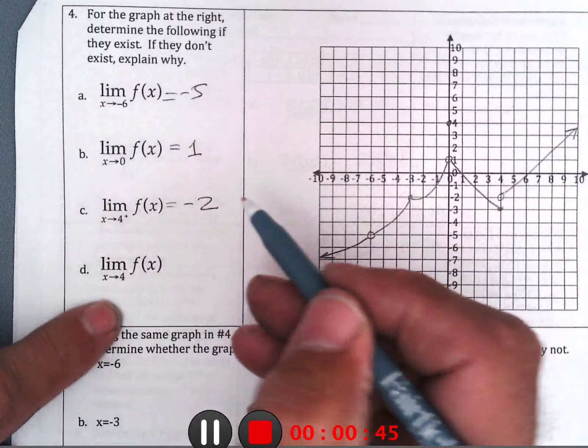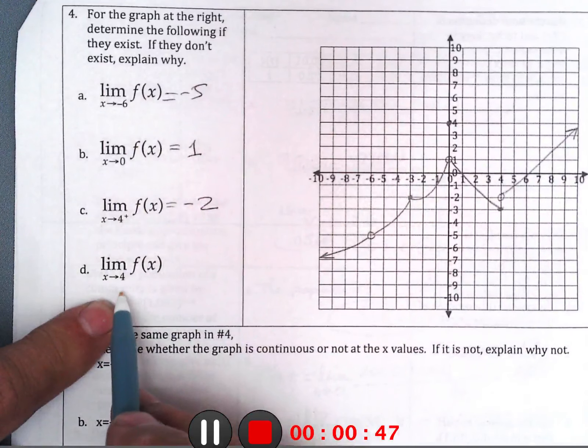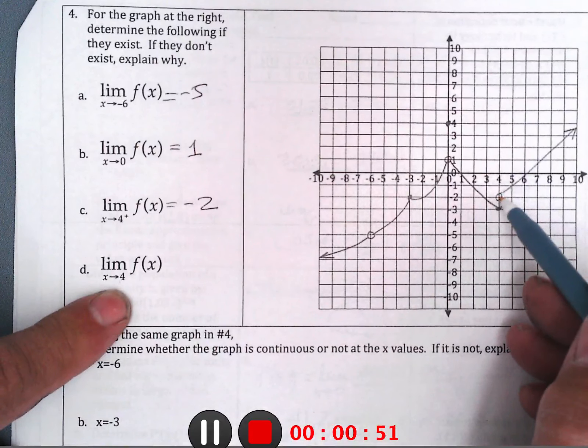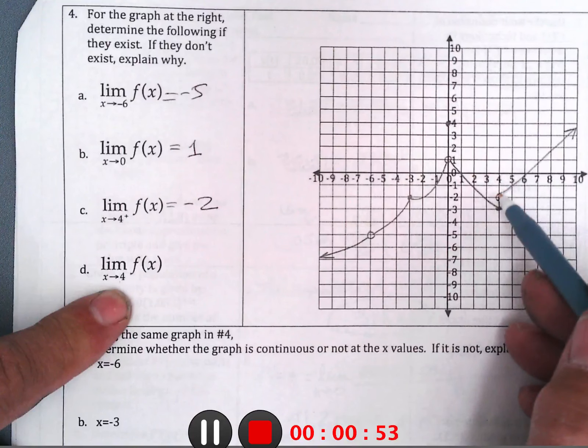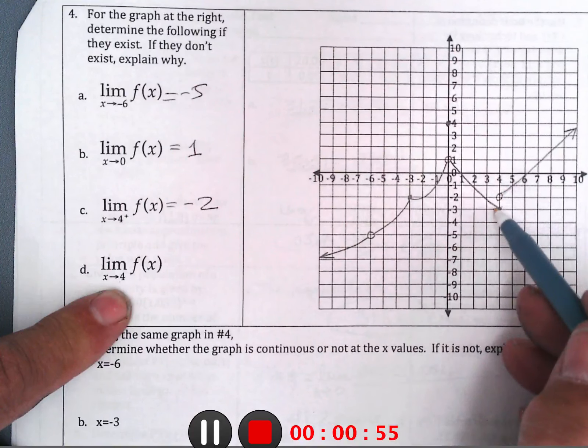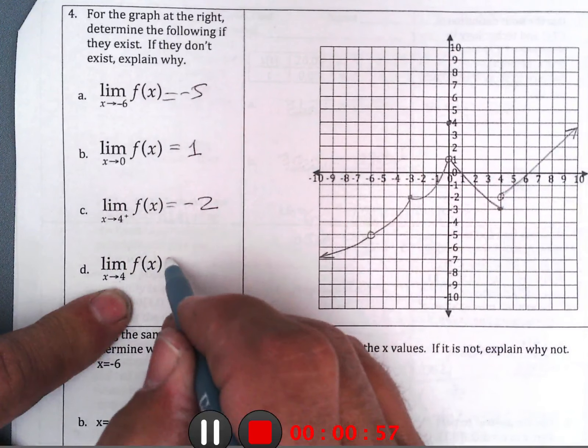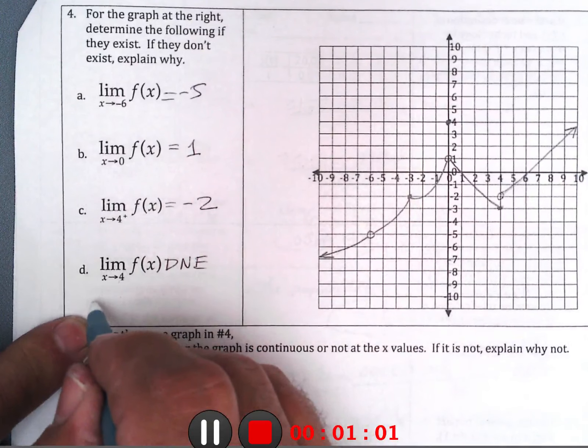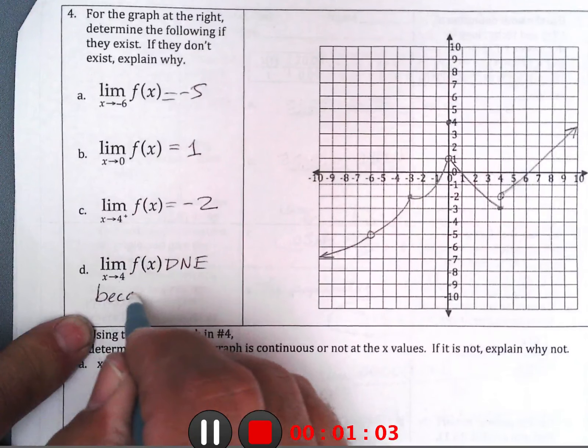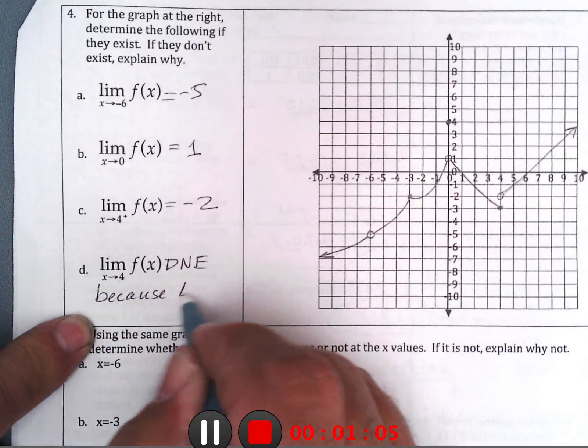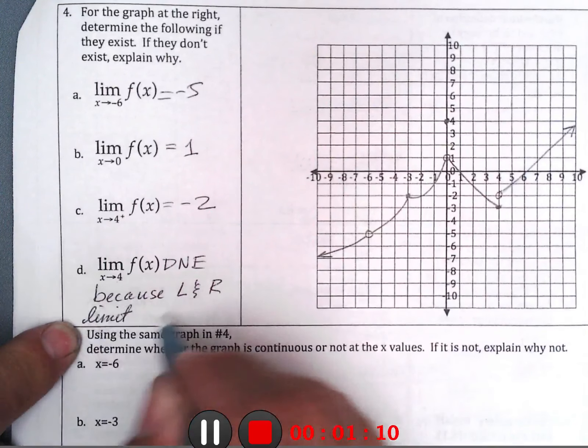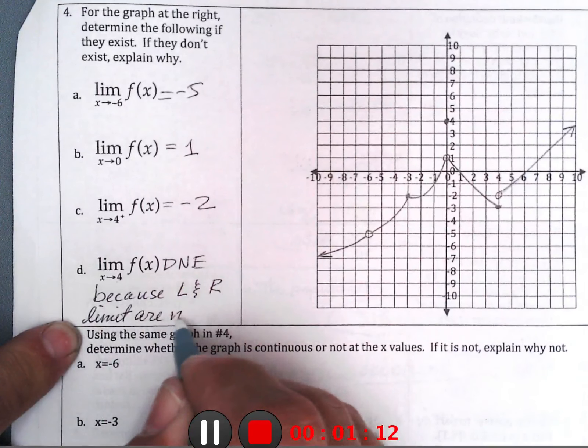Now this says we approach from both sides towards 4. Well, from either side, this side is negative 2, this side is negative 3, so this does not exist because left and right limits are not equal.